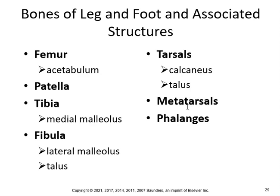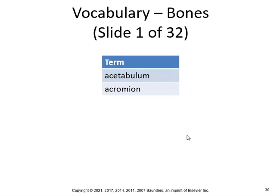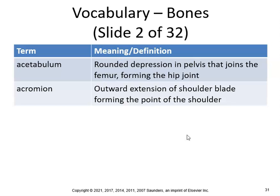Key vocabulary: the acetabulum is a rounded depression in the pelvis that joins the femur to form the hip joint — the head of the femur fits into the acetabulum. The acromion is an outward extension of the shoulder blade forming the point of the shoulder.